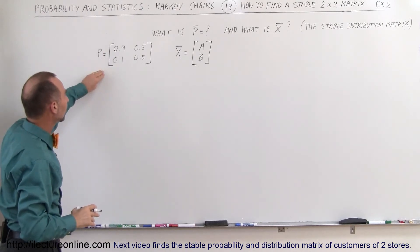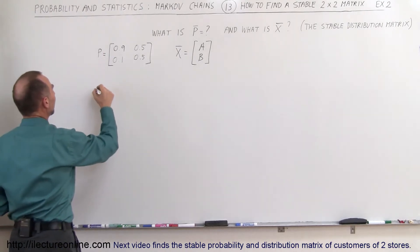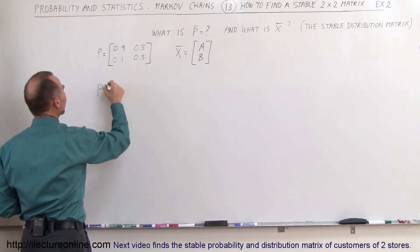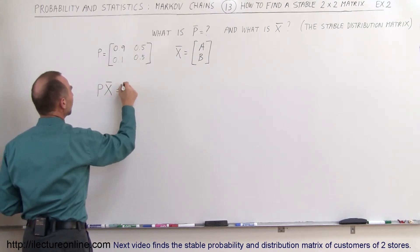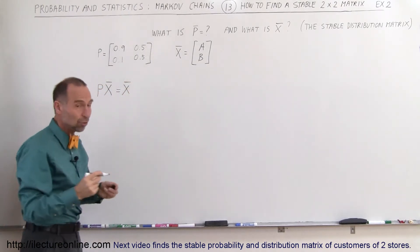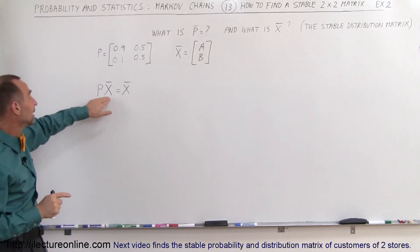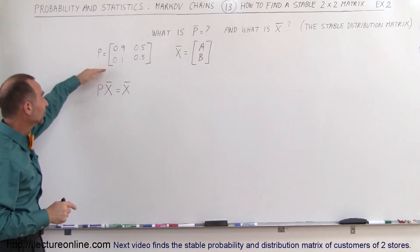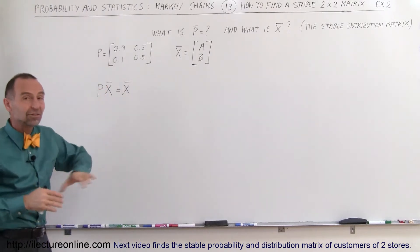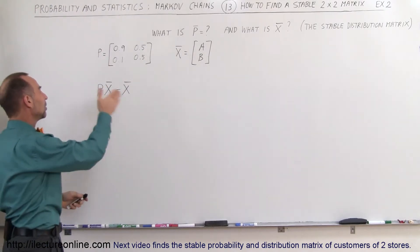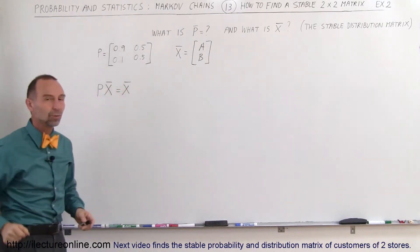We begin with the concept that if you multiply the probability matrix times the stable distribution matrix, we should get back the stable distribution matrix, because that's the hallmark of the stable distribution matrix. If you keep multiplying it times P, eventually it settles into a stable matrix that no longer changes. You can keep multiplying times P and the numbers will no longer change.